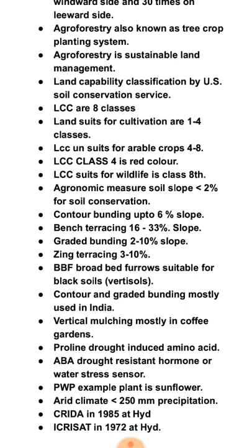Black soils are also called Vertisols. Contour and graded bunding are mostly used in India. Vertical mulching is mostly used in coffee gardens. Proline is a drought-induced amino acid in drylands. ABA (Abscisic Acid) is a drought-resistant hormone or water stress sensor. PWP (Permanent Wilting Point) — example plant is sunflower.